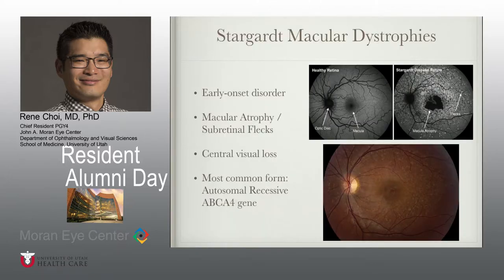To begin, I'd like to briefly go over what exactly the Stargardt macular dystrophies are. They are a group of early onset disorders characterized by macular atrophy and subretinal flecks that lead to central visual loss, typically in the first or second decade of life.